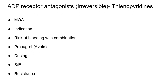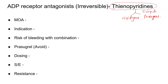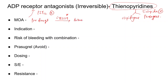The irreversible ADP receptor antagonists are thienopyridines, which include clopidogrel and prasugrel. Ticlopidine was also in this group but is no longer used due to severe thrombocytopenia. The mechanism of action is ADP receptor antagonism at the P2Y12 receptor. Importantly, these two drugs are prodrugs — they need activation by the CYP2C19 enzyme to become the active drug.